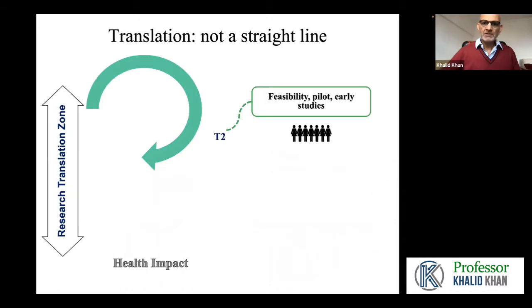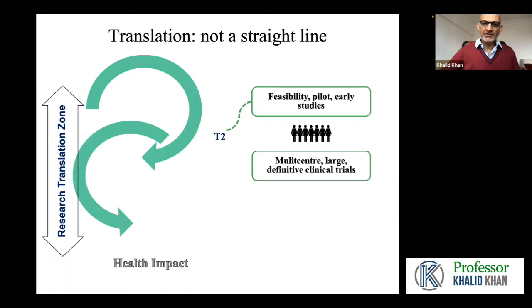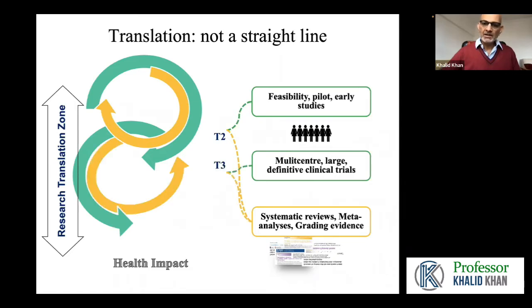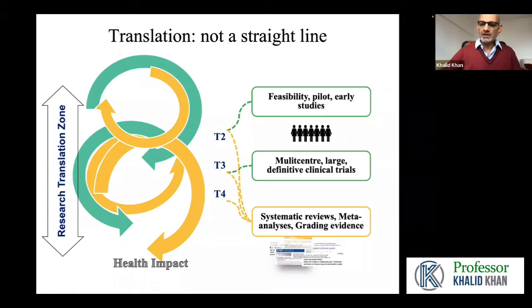Here we have the same journey. The feasibility studies can precede multi-center studies as explained earlier. These early studies can be put together in systematic reviews and meta-analysis to learn about how to do these studies better, and to learn how to do the multi-center studies based on prior knowledge in a way that they will be definitive. These multi-center studies frequently need to be repeated, informed by systematic reviews, and ultimately all of this is put together into guidelines for clinical practice and policy.